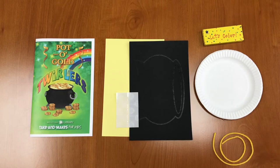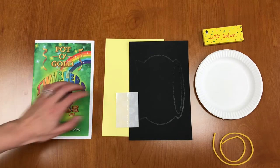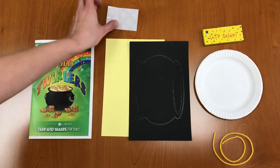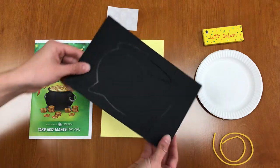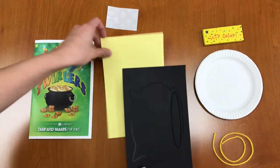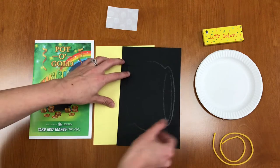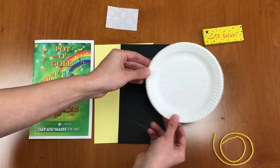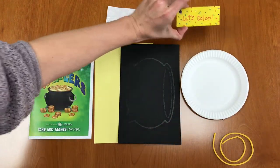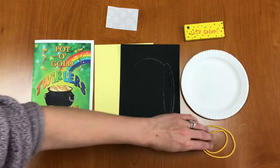Let's go ahead and get started and take a look at what we have in our craft kits today. In your Take and Make kit you should have an instruction booklet, six glue dots, a black piece of paper with a cauldron on it, a yellow piece of paper, a little paper plate, some crayons, and a piece of string.